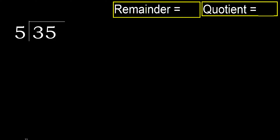35 divided by 5. 3 is less, therefore next. 35 is not less, therefore proceed with 35.